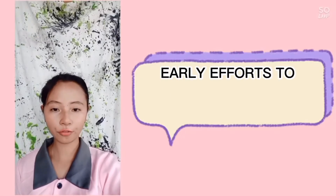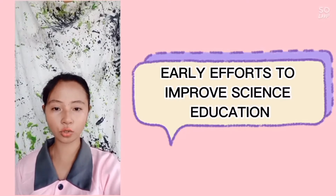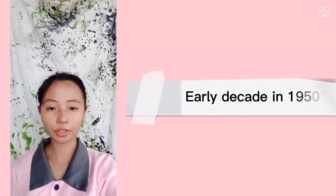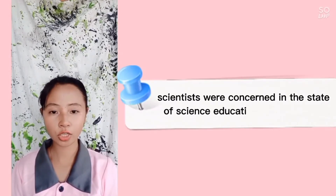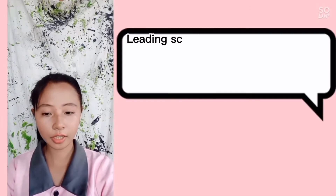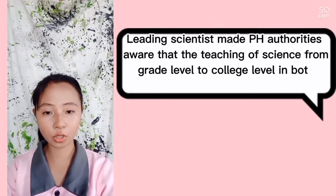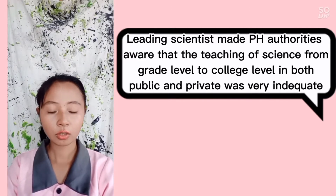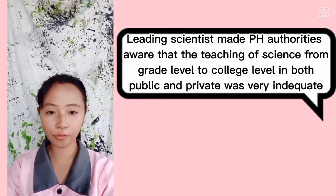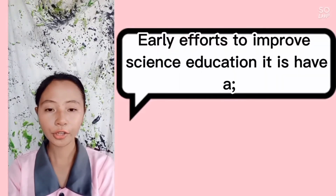Early efforts to improve science education. In the early decade of the 1950s, scientists were concerned about the state of science education in schools. Leading scientists made Philippine authorities aware that teaching science from grade level to college level, both public and private, was very inadequate.